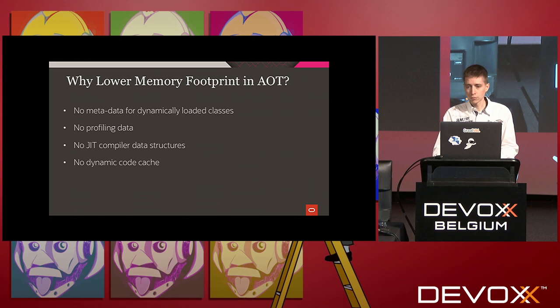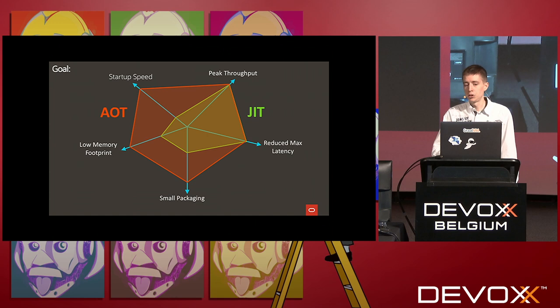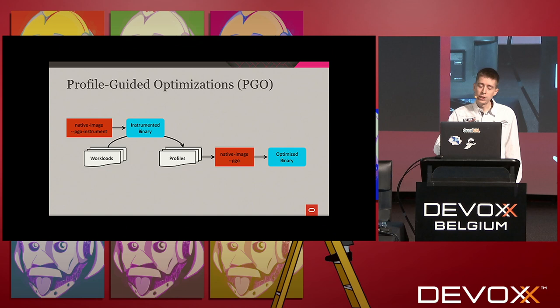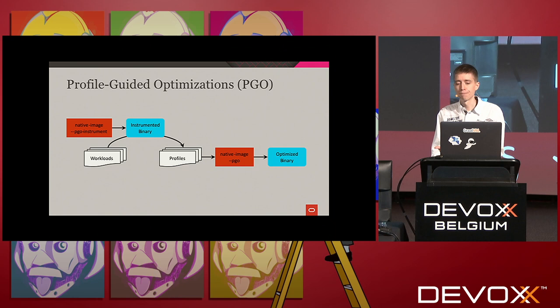In the GraalVM team we have a goal to improve AOT mode peak throughput and reduce max latency. Projects in the pipeline include a new garbage collector based on G1, and fixing several runtime performance issues. One approach to even better and more predictable performance is profile-guided optimization: gather profiles offline before building the final optimized binary, feeding them in to guide optimization. This allows predictable performance, since you can use test workloads to stress the cases you care about most.